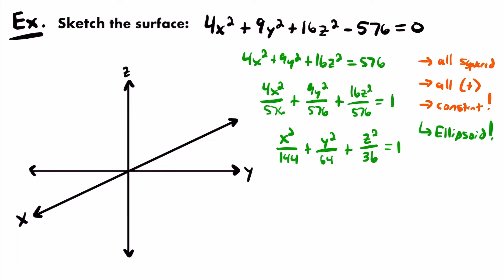Remember that all of the traces for an ellipsoid will be ellipses. So in each of the coordinate planes — the xy, yz, and xz — the traces for this surface will be ellipses. We can sketch those pretty easily by identifying the intercepts for the x, y, and z axes by looking at the values in the denominators. The square root of 144 gives the x-intercepts, the square root of 64 gives the y-intercepts, and the square root of 36 gives the z-intercepts.